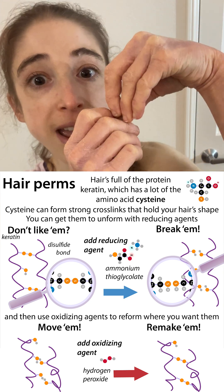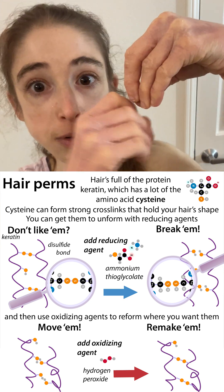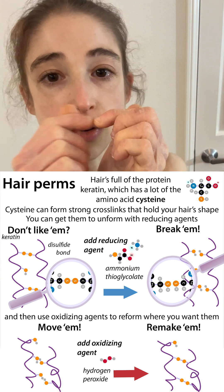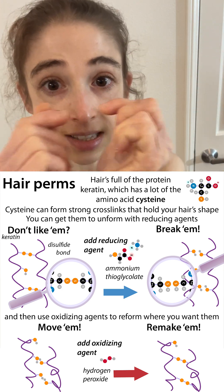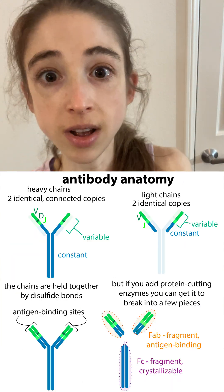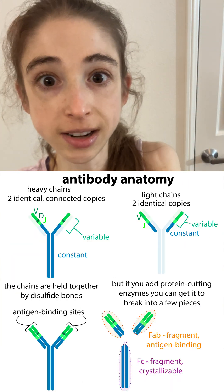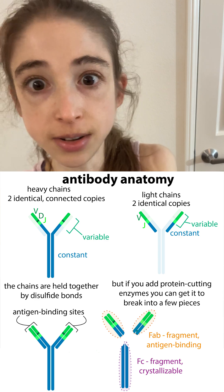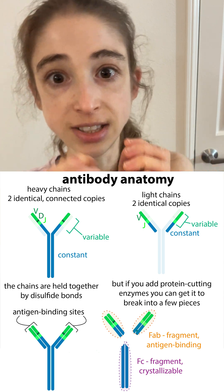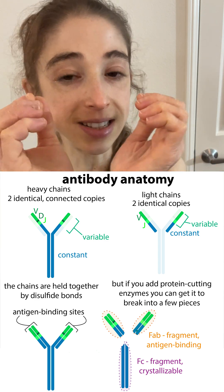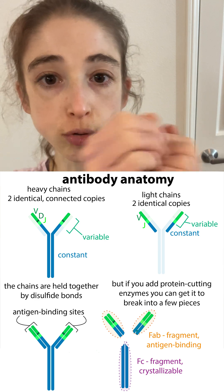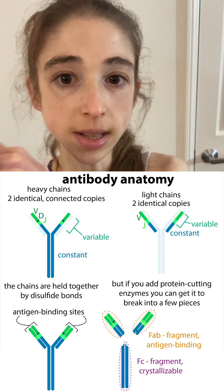And now when you remove the curlers, the hair stays like that because you've got these covalent crosslinks stabilizing it. We also get these covalent crosslinks stabilizing the keratin in our nails, as well as stabilizing things like antibodies that need to be able to travel through the bloodstream.